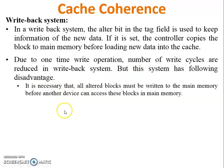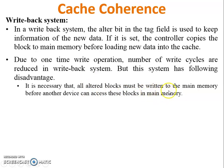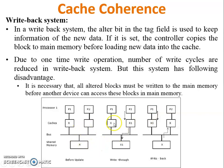However, write-back has a disadvantage: all altered blocks must be returned to main memory before another device can access those blocks. Since input/output devices also access main memory continuously, any processor modification must be written back before another device accesses the data. A diagram is provided for better understanding of both write-through and write-back systems.